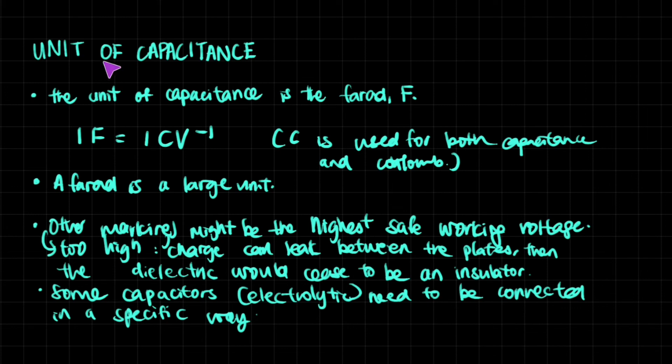As I talked about, the unit of capacitance is called the farad. And it is represented by a capital F. Don't get confused with the Fahrenheit F. I think it's pretty easy to tell them apart in terms of context. So yeah, one farad is one Coulomb divided by one voltage. C is used for both capacitance and Coulomb.